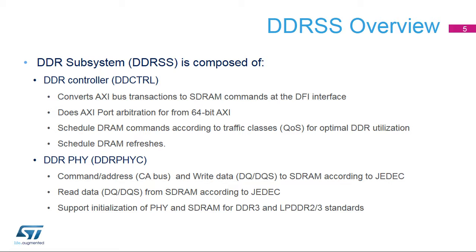DFI is the standard interface between the DDR controller and the DDRPHY. The DDRCTRL is in charge of converting AXI bus transactions to DRAM transfers at the DFI interface. AXI port arbitration: DDRCTRL is equipped with a dual 64-bit AXI interface. It schedules DRAM commands according to traffic classes, or QoS, for optimal DDR utilization.